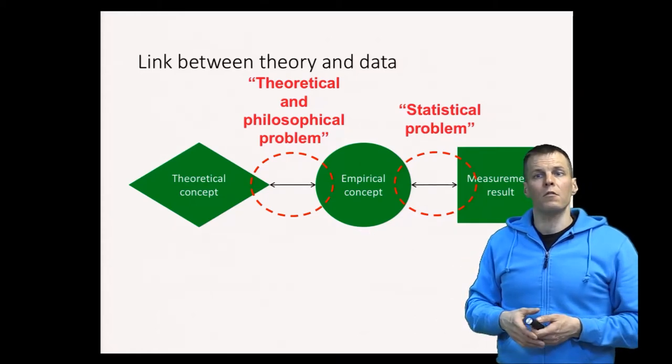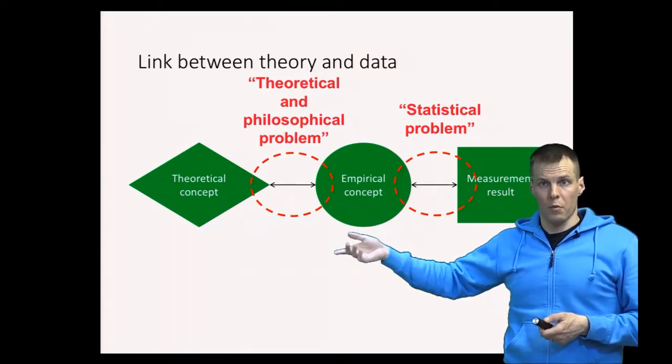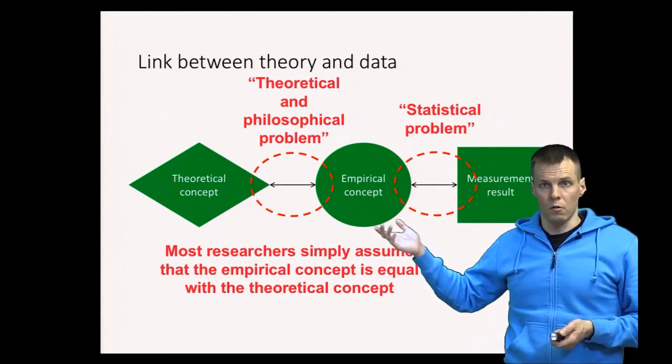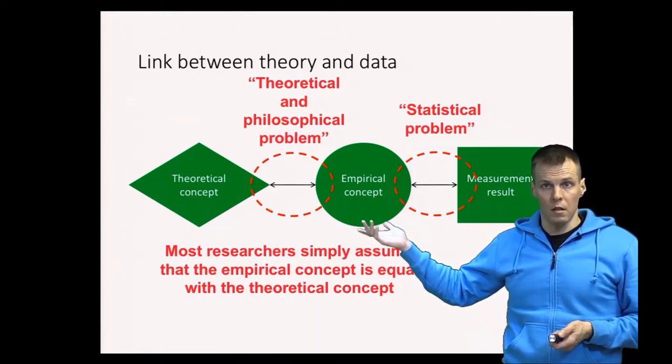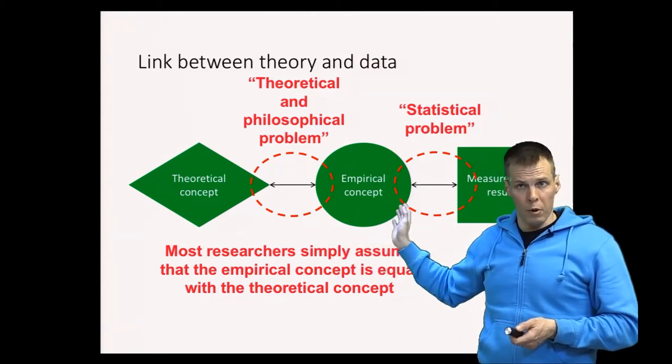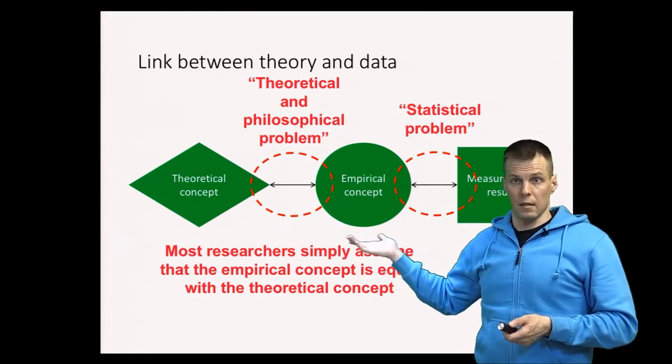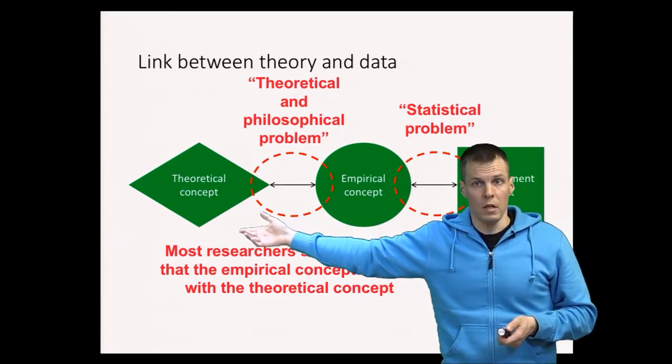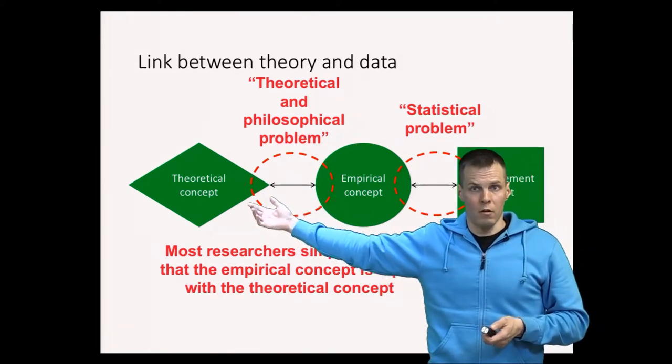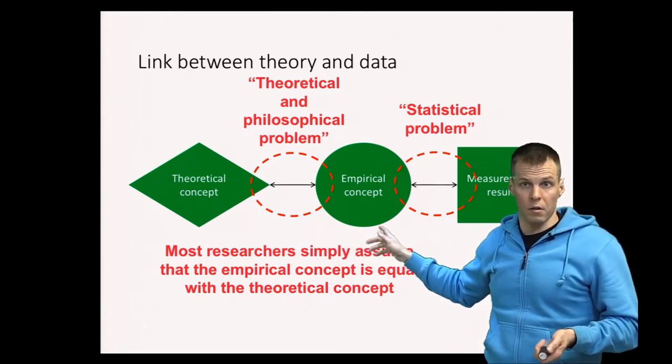Most researchers, when we do research, apply the empirical concept as a proxy. In practice, that means that we simply assume that the empirical concept is equal to the theoretical concept. Once we have argued that this empirical concept has some relevance for the theory, then we use it as a substitute or proxy for the theoretical concept. The reason is that we really cannot measure a theoretical concept directly. So using this empirical concept as a proxy is the best thing that we can actually do.